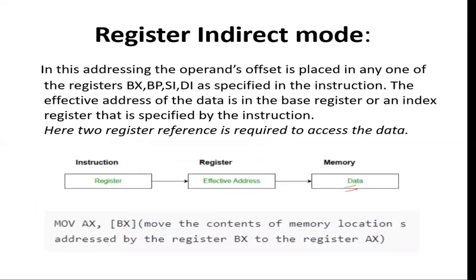Next is register indirect mode. With 'indirect' we mean that first we access one register from where we get the effective address — the actual address of the operand — and then we refer to that effective address. So we get the first reference from the register, then from that address we refer to that memory location and fetch the data. In the example 'MOV AX, [BX],' the square brackets indicate indirect addressing. We get the effective address in BX, and at that effective address we find our data.